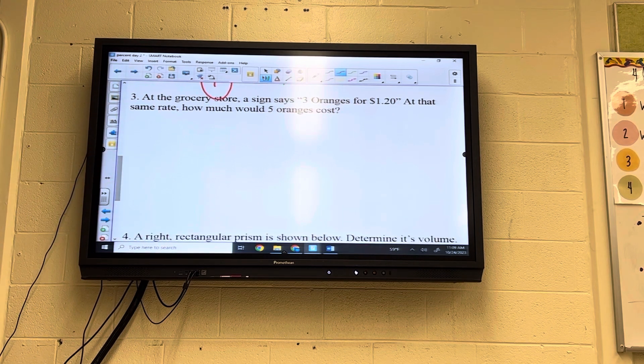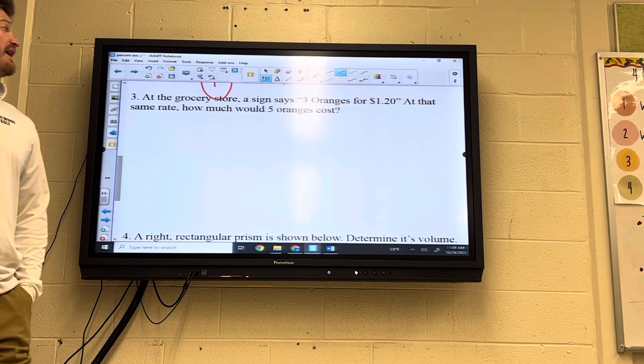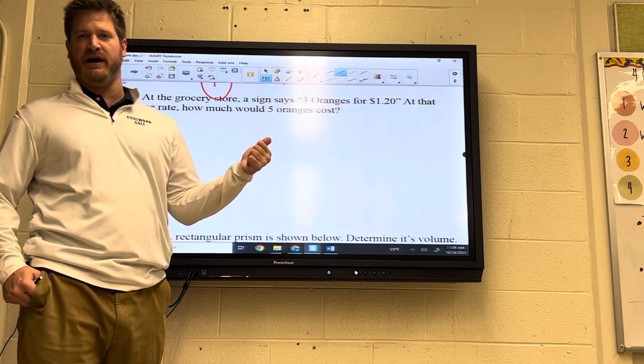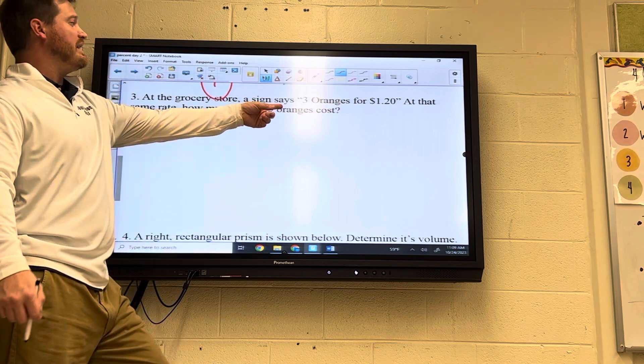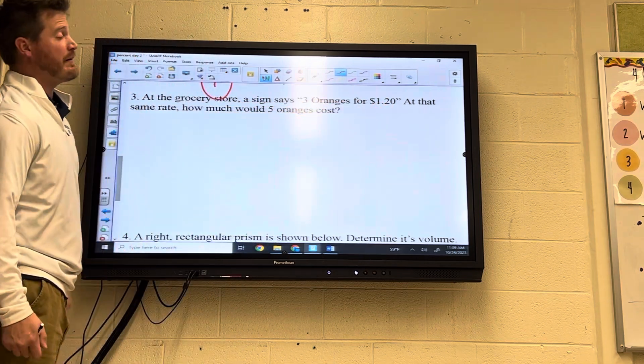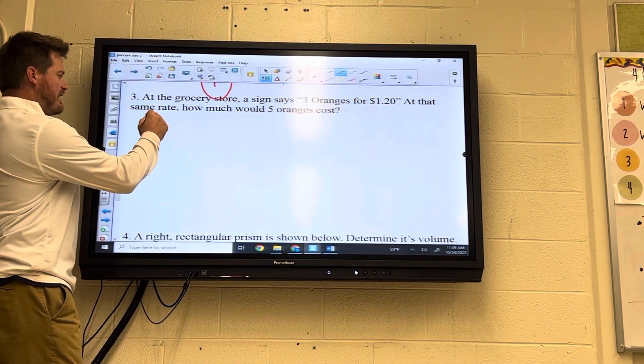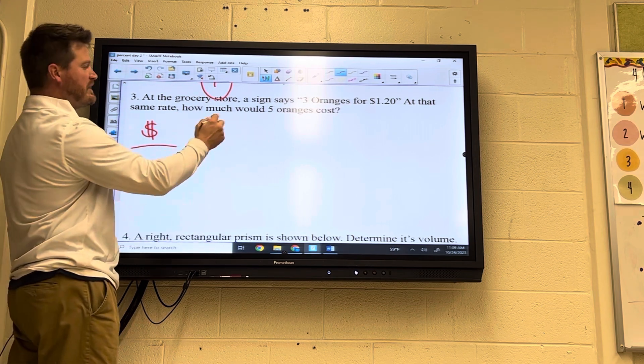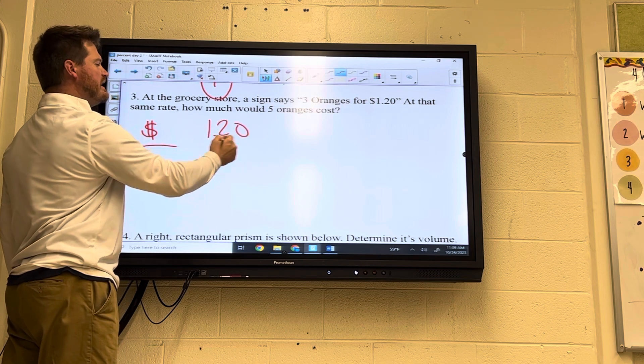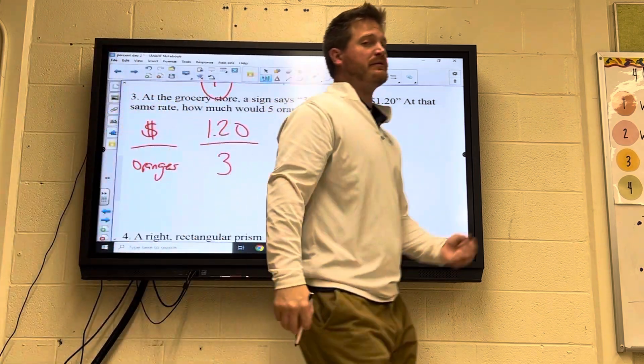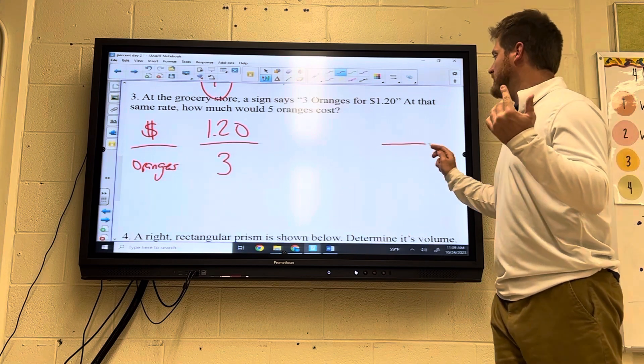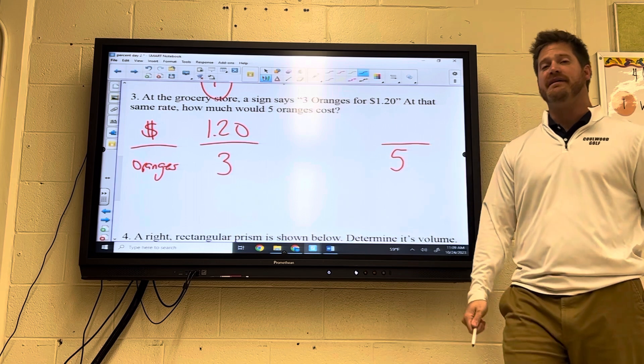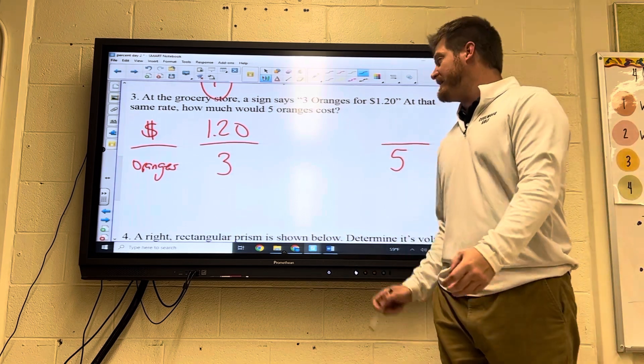Next one at a grocery store. A sign says three oranges for $1.20. At that same rate, how many would five oranges cost? Well, if three oranges cost $1.20, five is going to cost more than $1.20. So we've got to make sure our answer is more than that number right there. Now, when I'm setting up my ticket, I've got money, and I've got oranges. How much money? Well, we're spending $1.20 for three oranges. We don't care about three oranges. We want to get five of them. Now, when you see something like this, we know that three does not evenly go into five. So we've got to knock it down to one first. We've got to find that unit rate.